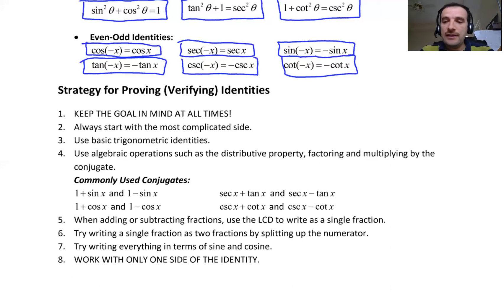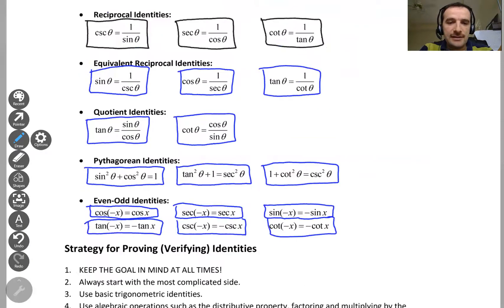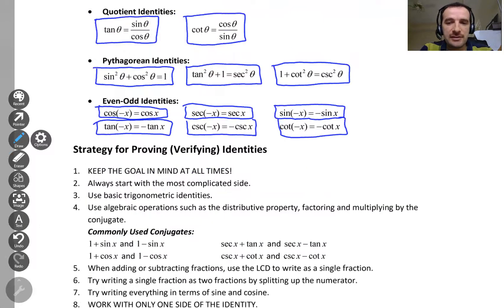Work with only one side of the identity and you can see that one side is equal to other sides. So these are main identities we are going to use. Let me go over quick here again. These are the identities and these are some strategies to do that.